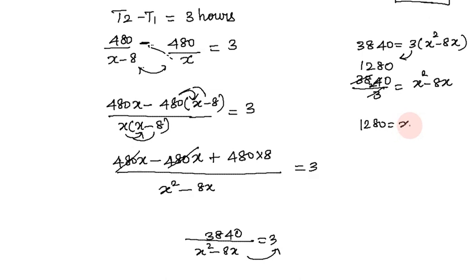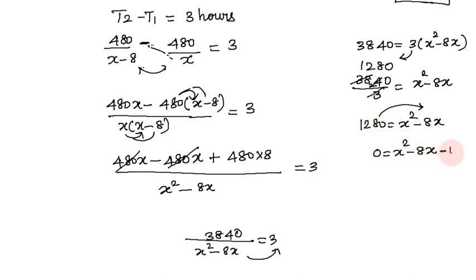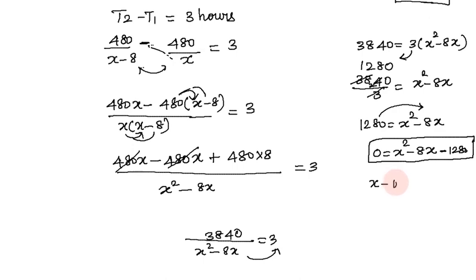So x squared minus 8x minus 1280 equals 0. This is the required quadratic equation representing the speed of the train, where speed is in kilometers per hour.